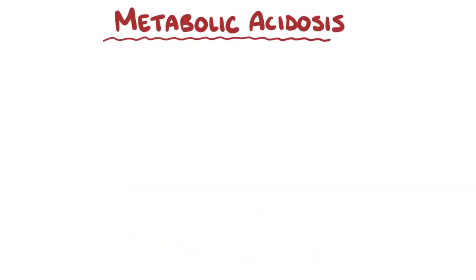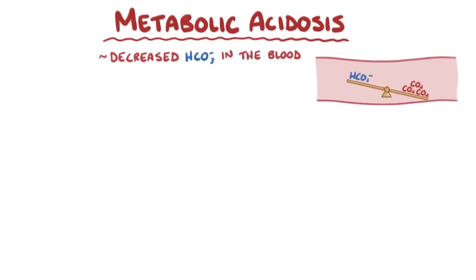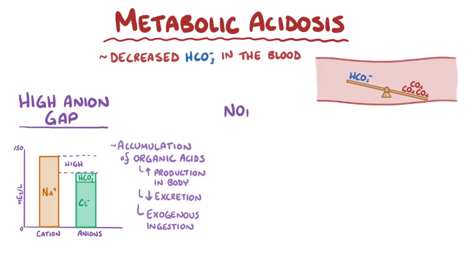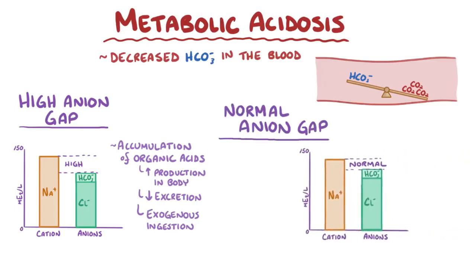As a quick recap, metabolic acidosis is usually caused by a decreased bicarbonate concentration in the blood. It can be classified into high anion gap cases, which are caused by the accumulation of organic acids, either due to their increased production in the body, decreased excretion, or exogenous ingestion. And the other type is normal anion gap cases, which are caused directly by a loss of bicarbonate ions, as is the case in diarrhea or type 2 renal tubular acidosis.